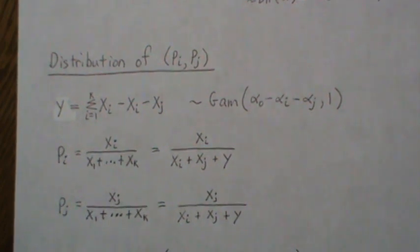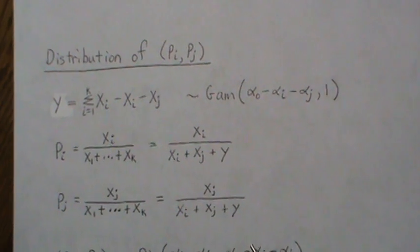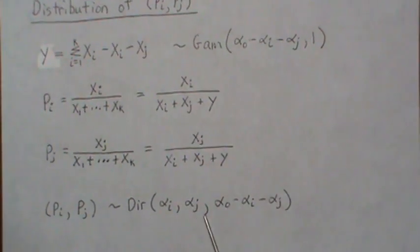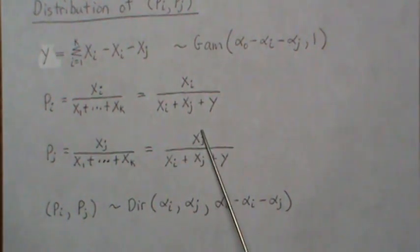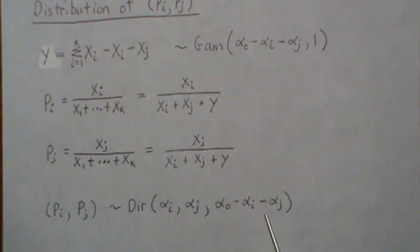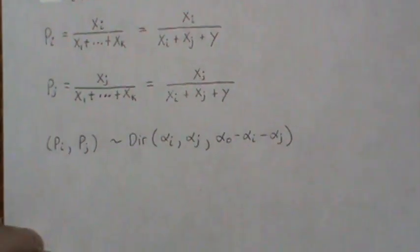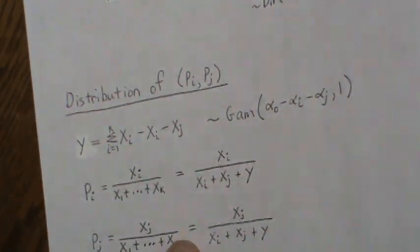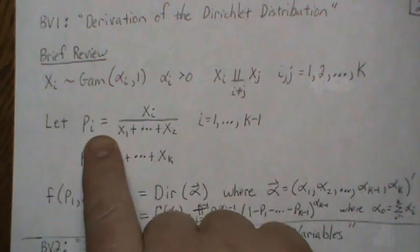and we know that the distribution of these is a Dirichlet. And so this is xi, this is alpha i, alpha j, and then this is the sum of them all, but not including alpha i and alpha j. And this right here is the exact same development that we did here.